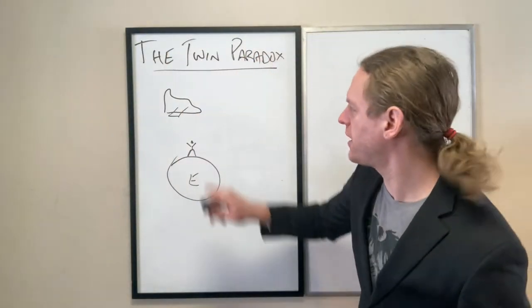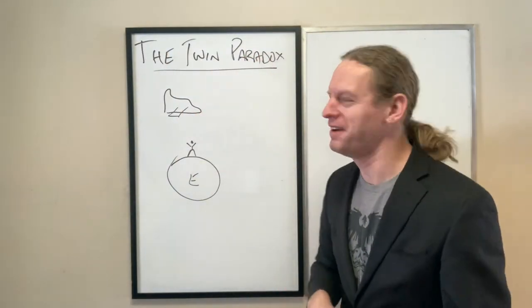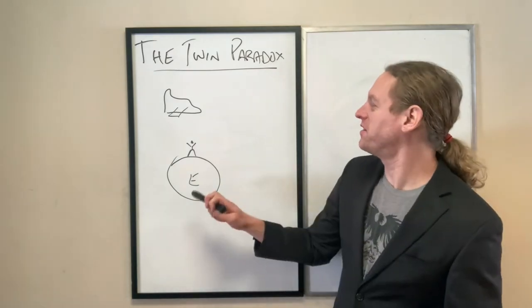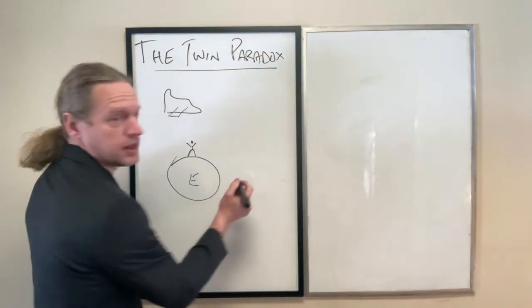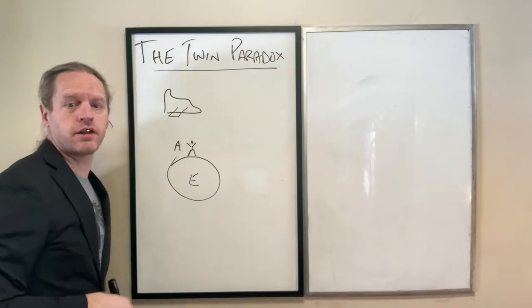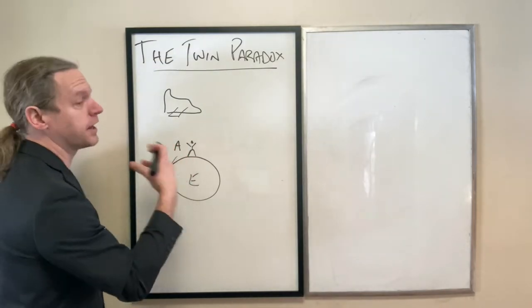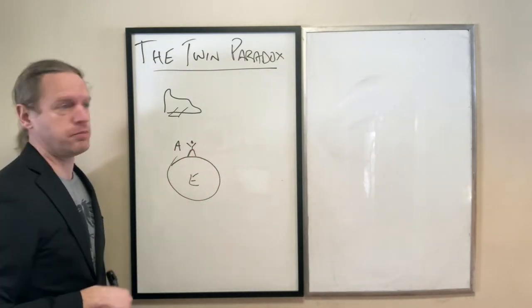So let's go ahead and restate the twin paradox, and I've started giving my spaceships wings now. I don't know why I wasn't before, but the basic idea was that you have person A here that's born on Earth, and they were born at the same time as their twin, who we're going to call person B.